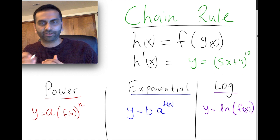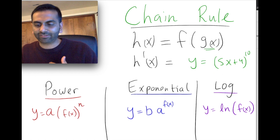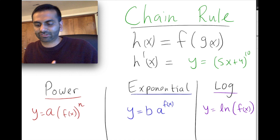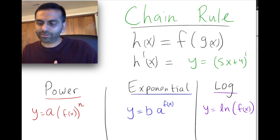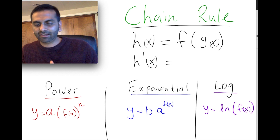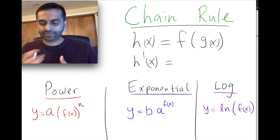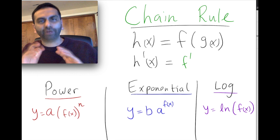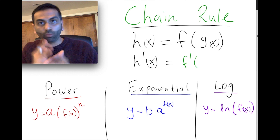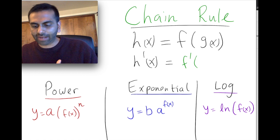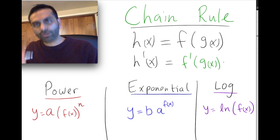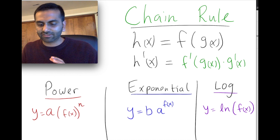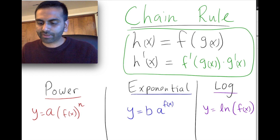In this notation, the inside function is called g(x) — for example, 5x + 4 — and the outside function is f, which is just x to the 10th power. So whenever you have f(g(x)) as your function, the derivative is f'(g(x)) — meaning you take the derivative of the outer function but keep whatever the inside function g(x) is — and then multiply by g'(x), the derivative of the inside function. This is how most calculus textbooks present the chain rule.